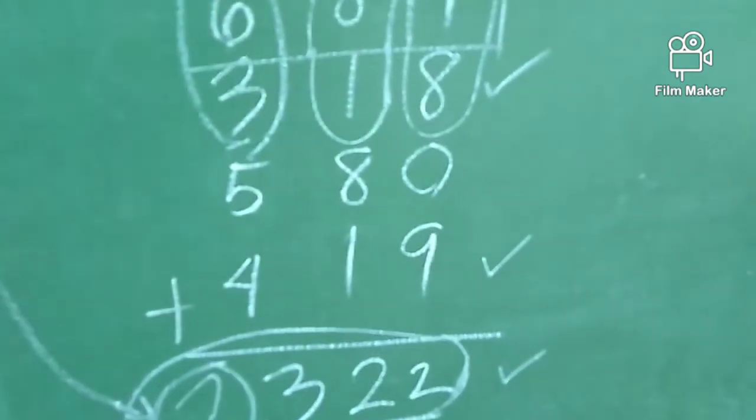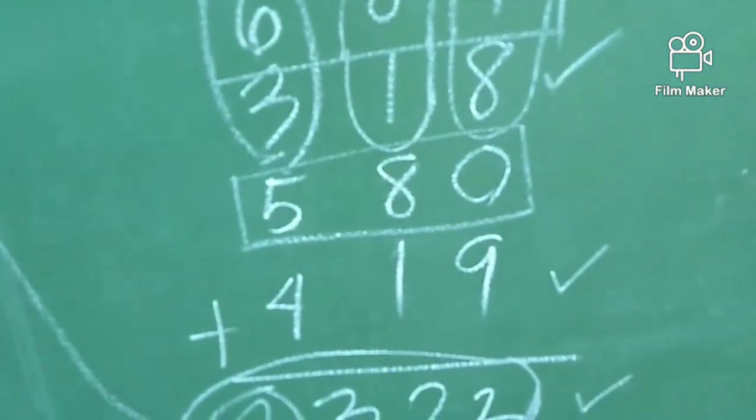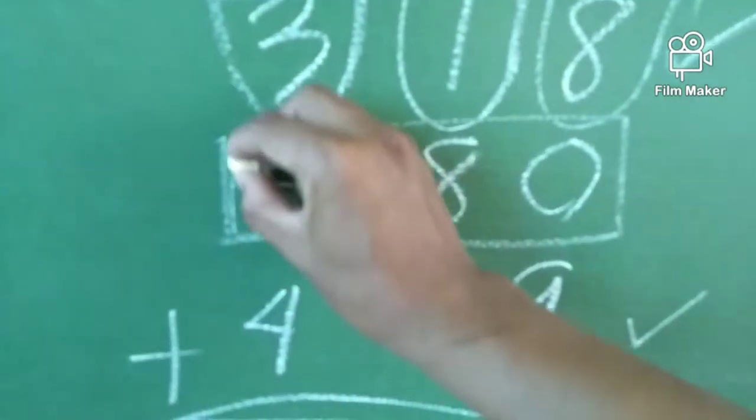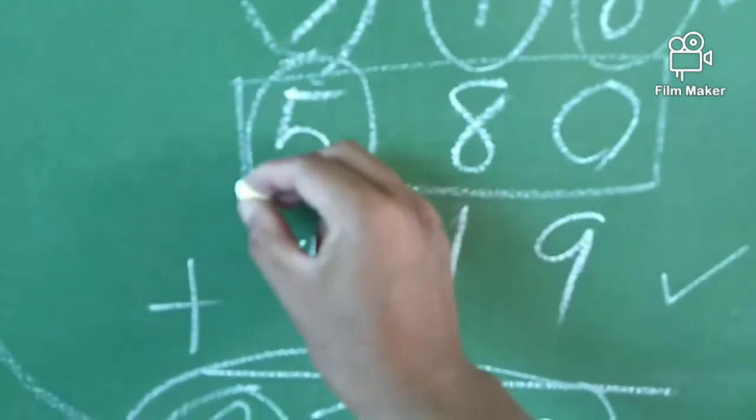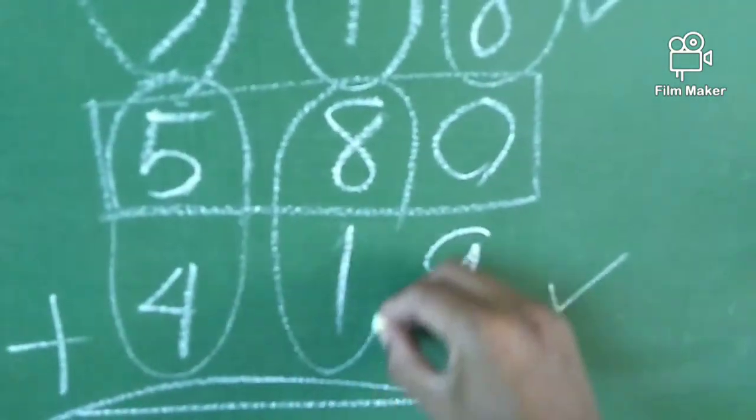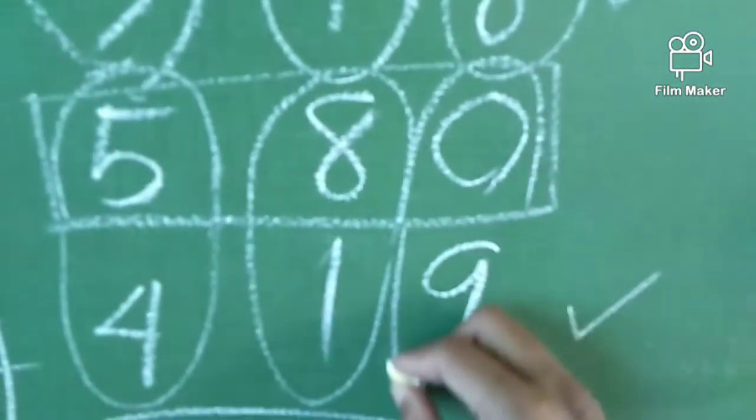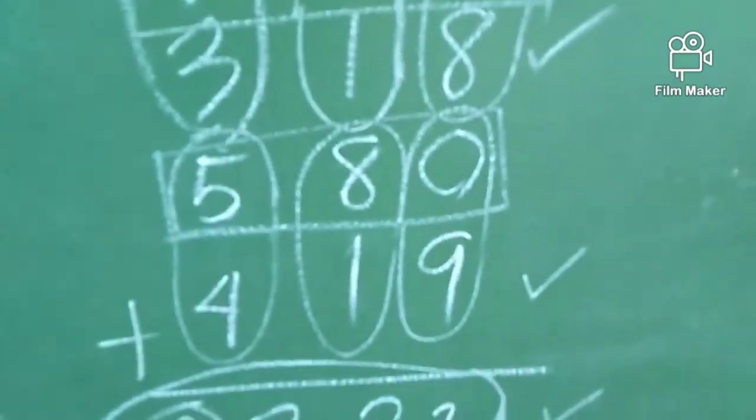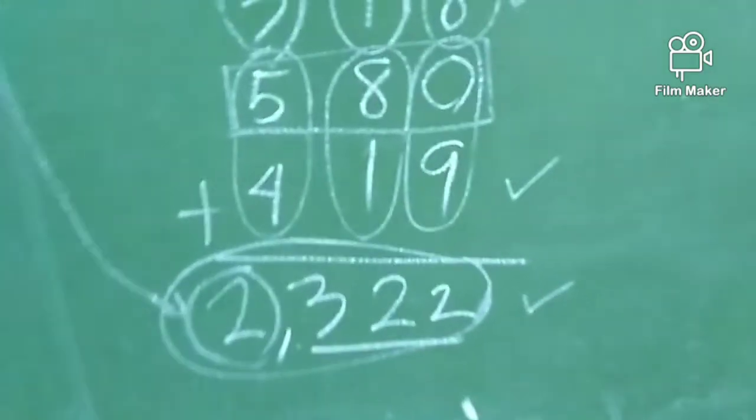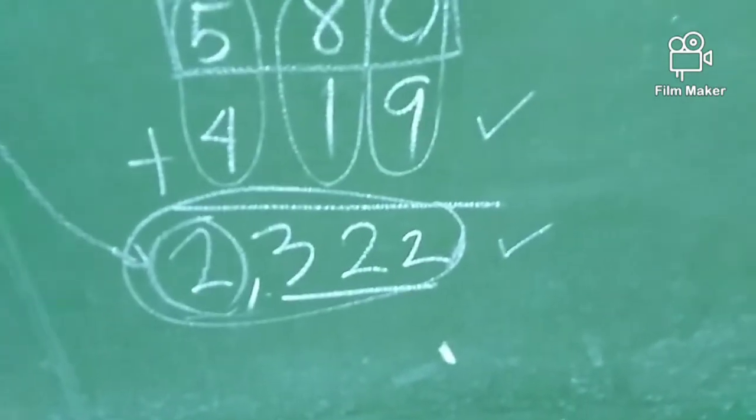Next, ask them again another 3-digit number. 5, 8, 0 was written. How much do you need for 5 to become 9? 4. For 8, how much? Again, 1. For 0, how much do you need to become 9? For 0, you need 9. In that case, no matter what happens, the number you wrote earlier, the answer you wrote earlier, that will be the answer.